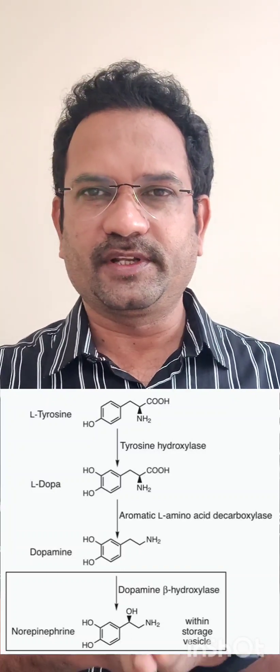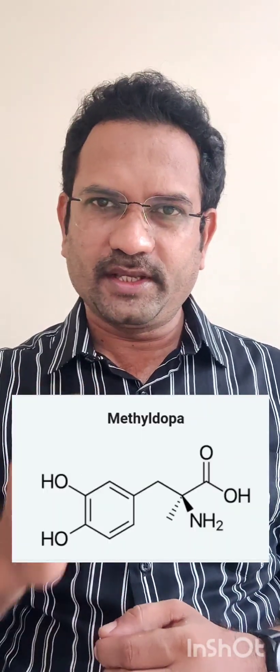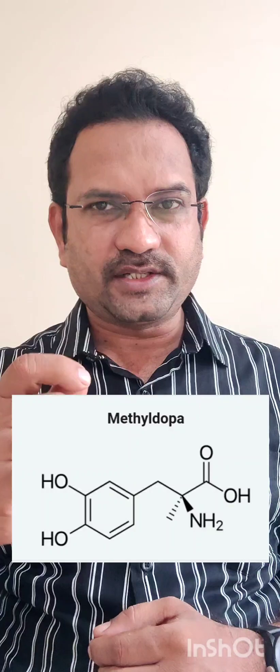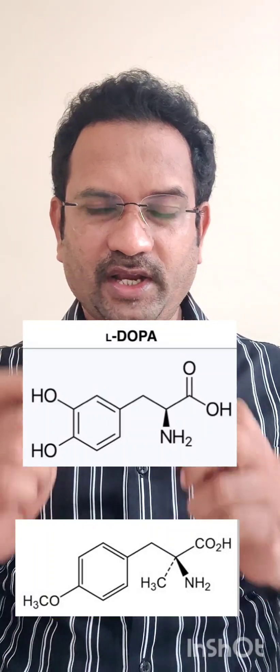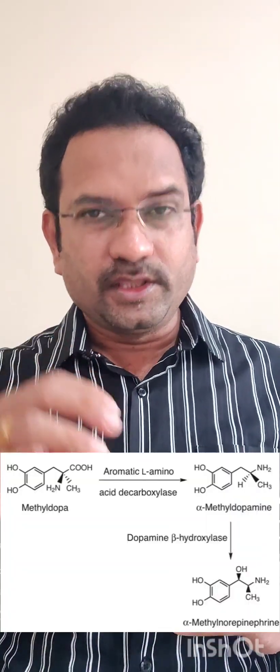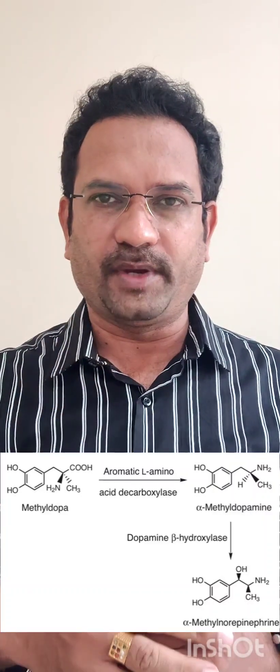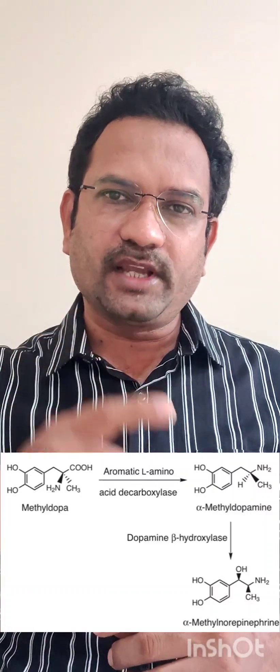What do we mean by false neurotransmitter? There is a drug called methyl dopa. Methyl dopa is used to treat hypertension. When methyl dopa is given, it gets into the neurons. It is structurally similar to dopa — look at the structures. On the alpha carbon, only a methyl group is added to dopa, hence it is called methyl dopa. Because of this structural similarity, methyl dopa gets into the neuron, and dopa decarboxylase acts on methyl dopa, converting it to methyl dopamine.